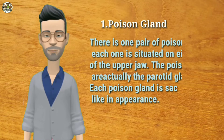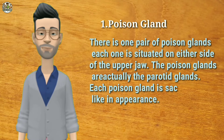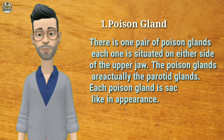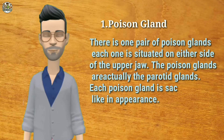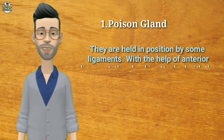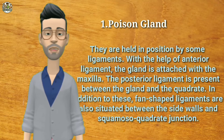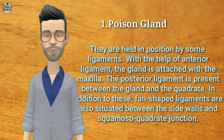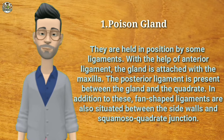Poison glands: there is one pair of poison glands, each one situated on either side of the upper jaw. The poison glands are actually the parotid glands. Each poison gland is sac-like in appearance and they are held in position by some ligaments. With the help of the anterior ligament, the gland is attached with the maxilla.